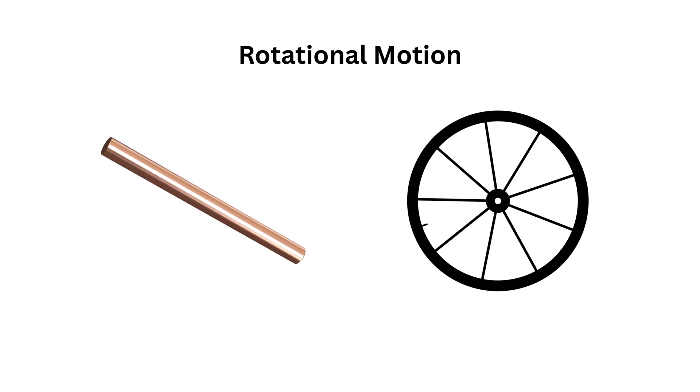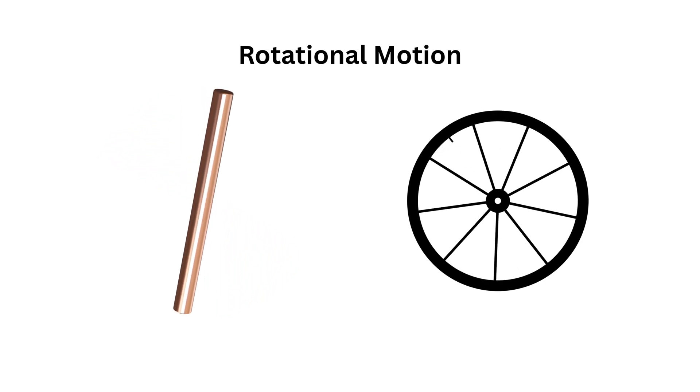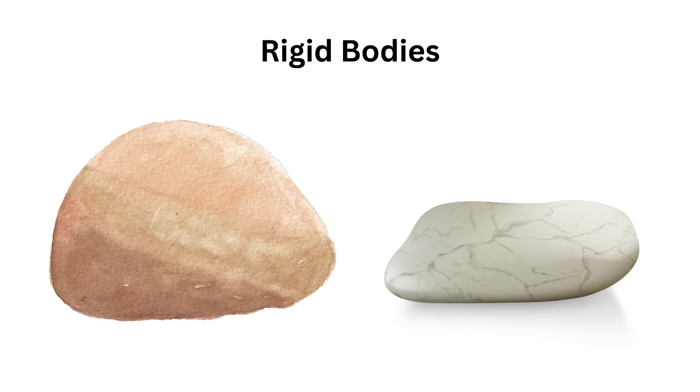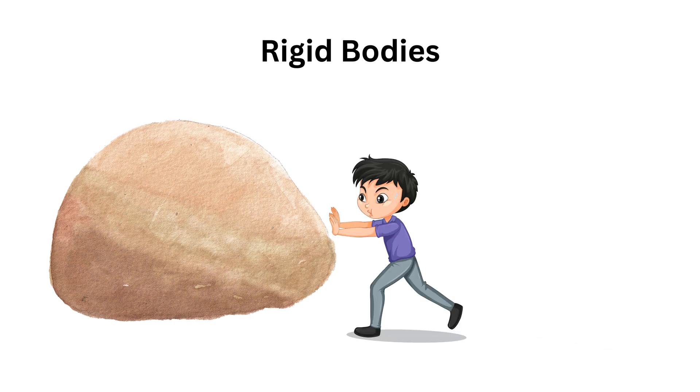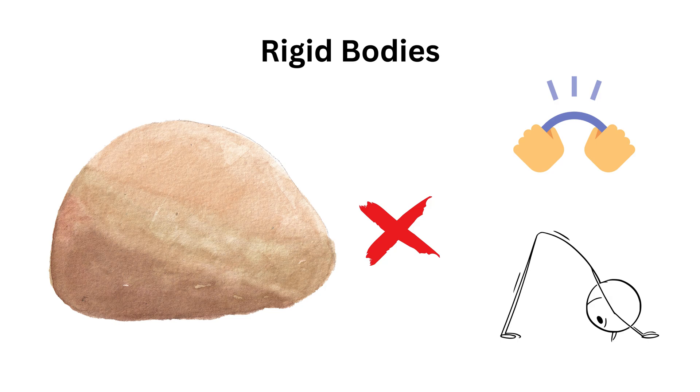And to fully grasp how these objects move, we first need to understand an important concept called rigid bodies. When we study rotational motion, we usually deal with rigid bodies unless stated otherwise. A rigid body is an object in which the distance between any two points remains constant, even when forces are applied to it. In simple terms, a rigid body doesn't bend, stretch, or deform.